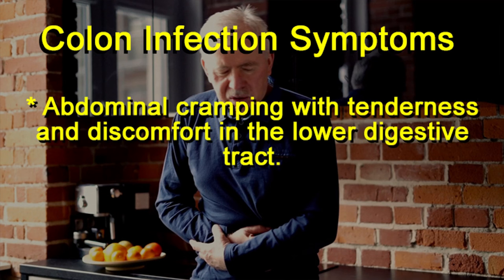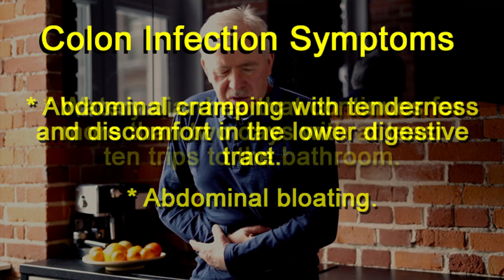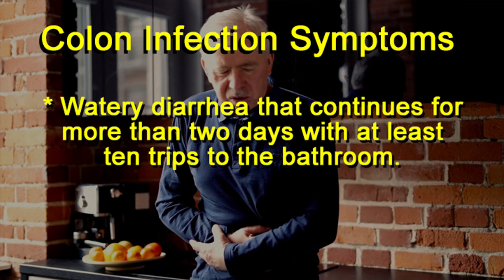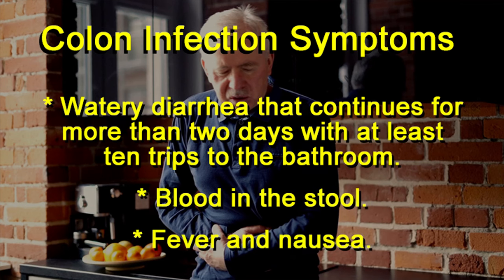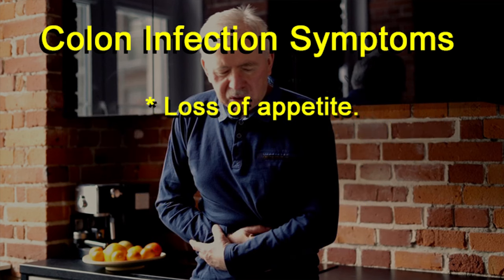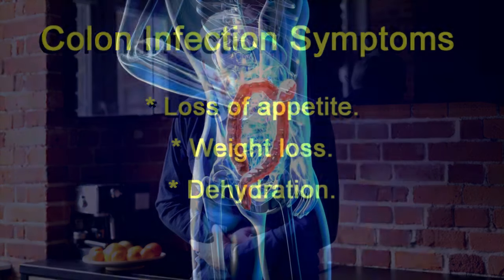Abdominal cramping with tenderness and discomfort in the lower digestive tract. Abdominal bloating. Watery diarrhea that continues for more than two days with at least 10 trips to the bathroom. Blood in the stool. Fever and nausea. Loss of appetite. Weight loss. Dehydration.